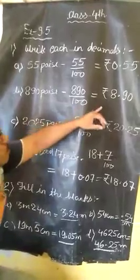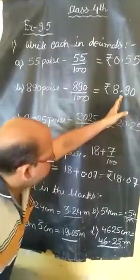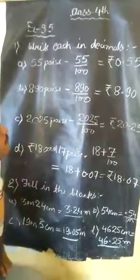We put the decimal two digits from the right side. It will be ₹8.90.